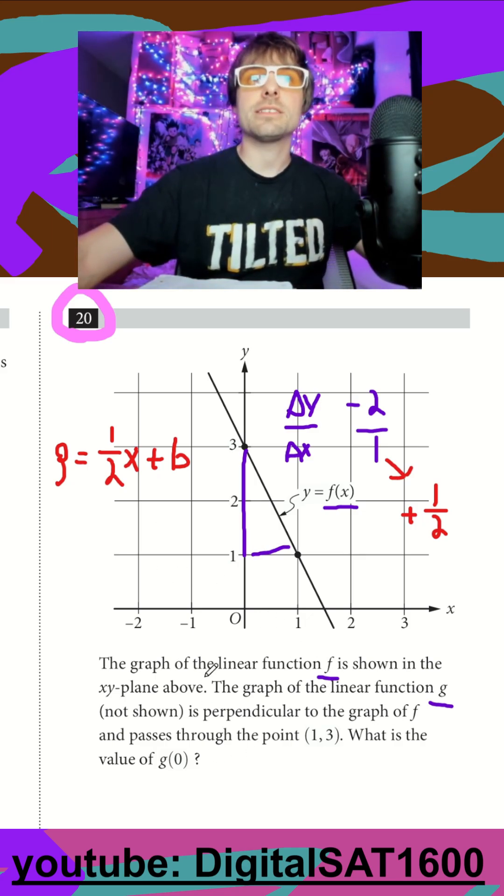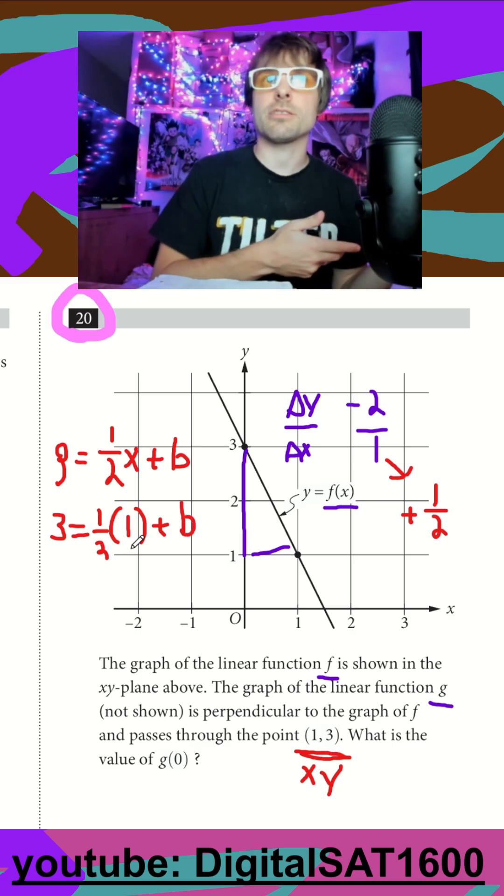They do. They tell us that it is not only perpendicular to f, but it also passes through the point 1 3. That's an xy point, so I can plug that in for this. I can say when my g or my y is 3, and then I plug in for my x a 1, what's going to have to be b to make it equal to the other side?